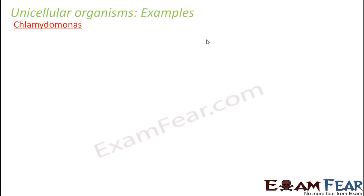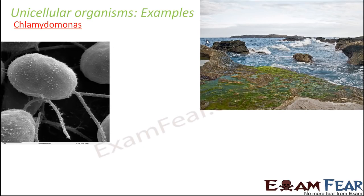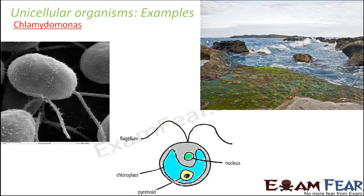The next example is chlamydomonas. This is a green algae. You would generally have seen algae on the surface of water — the green layer which is formed is nothing but algae. Chlamydomonas is an example of such algae, again unicellular and made of one cell. This is how the structure of chlamydomonas looks like — just one cell, and inside the cell you have a nucleus, a chloroplast, and flagella for movement. These are the different structures inside the cell.